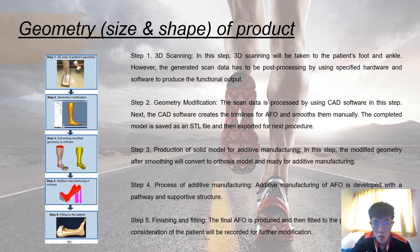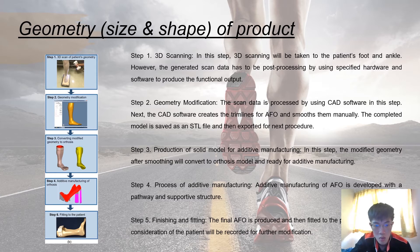Good morning, Prof. I will talk about the geometry of the product. To determine the geometry of the AFO accordingly, we need to carry out five steps: first, 3D scanning; second, geometry modification; third, production of STL file for additive manufacturing; fourth, the process of additive manufacturing; and the last step is finishing and fitting.